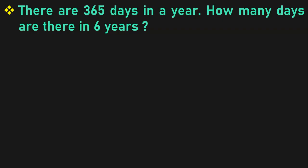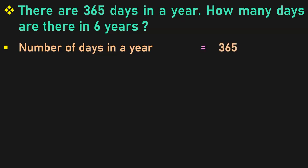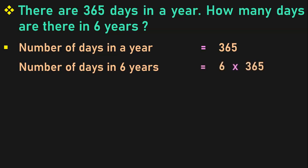Let us do the next type of sum. There are 365 days in a year. How many days are there in 6 years? Let us first write down the statements. Number of days in a year is equal to 365. Number of days in 6 years will be 6 into 365. This is a 3-digit by single-digit multiplication. I have dealt with this topic in a separate video with ample examples. The link to that video is given below in the description box.